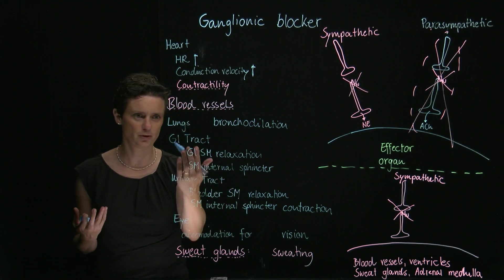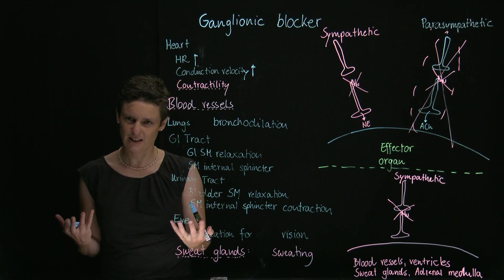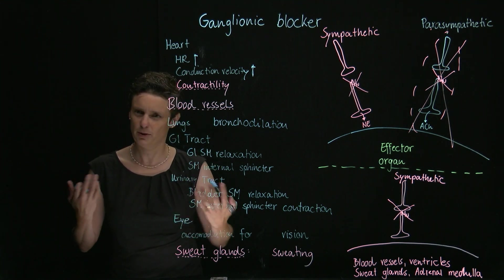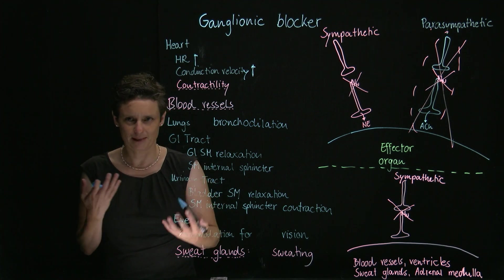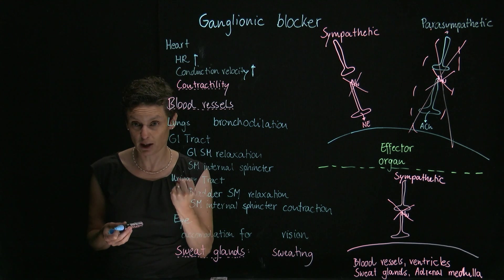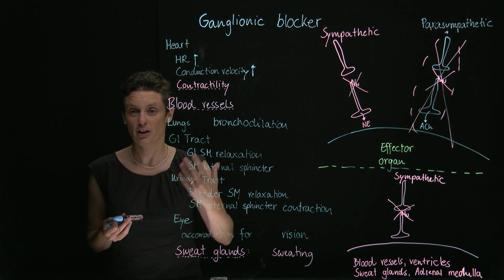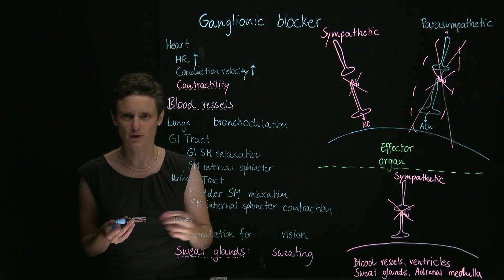What's going to happen to GI tract and urinary tract? The GI smooth muscle motility should relax because we don't want to have digestion going on. The internal sphincter, however, should be closed, should be tight, should be contracted, because now it's not the time to defecate or urinate if you're running away from a lion.